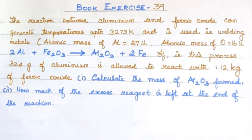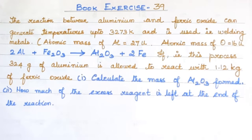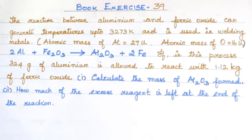The reaction between aluminium and ferric oxide can generate temperatures up to 3273 Kelvin and is used in welding metals. Aluminium and ferric oxide react at high temperatures to produce products at 3273 Kelvin. The balanced equation is: 2Al + Fe2O3 → Al2O3 + 2Fe.